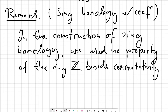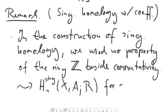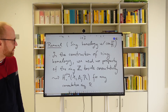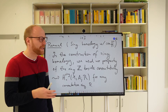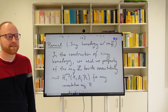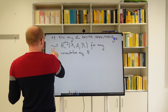Therefore, the same construction works for any commutative ring. We can define singular homology of a space X relative to a subspace A with coefficients in any commutative ring R. Where before we took the free abelian group — the free Z-module — generated by singular n-simplices, we could just as well take the free R-module generated by singular n-simplices, and the construction goes through as before.